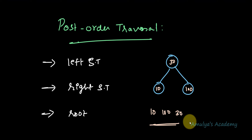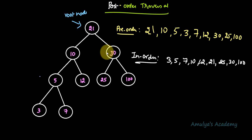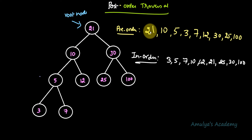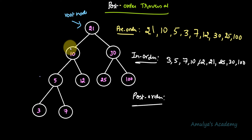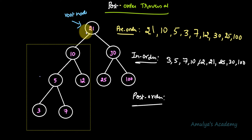Without wasting any time, let's move on to the example. In the previous tutorial we saw how to traverse this binary search tree using preorder and inorder traversal. Now we will see how to traverse it using postorder traversal — left, right, root. We need to start from the left subtree; this is the left subtree of the root node, and this is the right subtree.